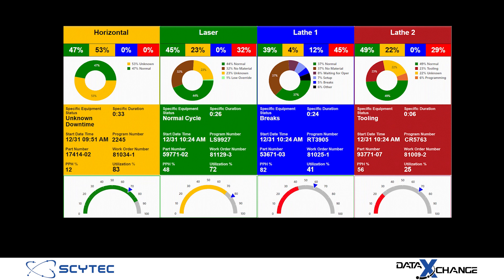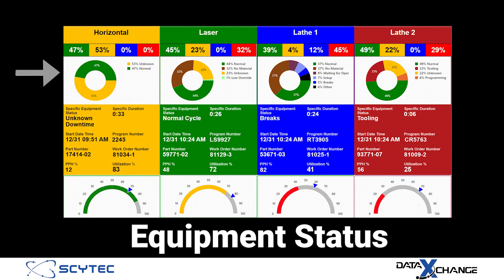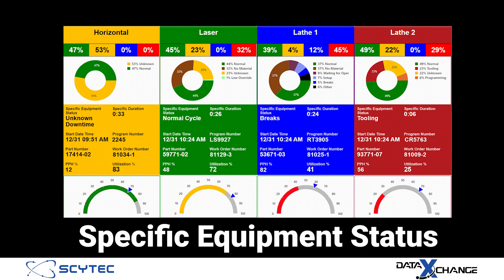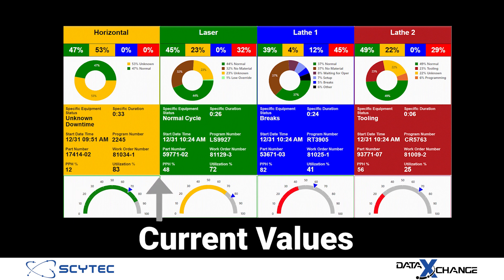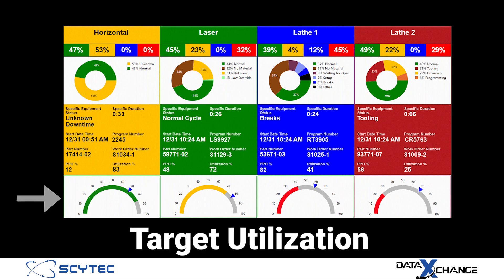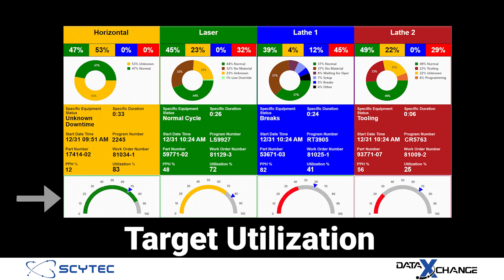These current values include equipment status, the high-level summary of equipment status, specific equipment status — the specific detail of the equipment status for the current shift or over the last X amount of hours — current values, and target utilization. Target utilization shows the current utilization relative to a target, color-coded based on how close the utilization value is to the target.